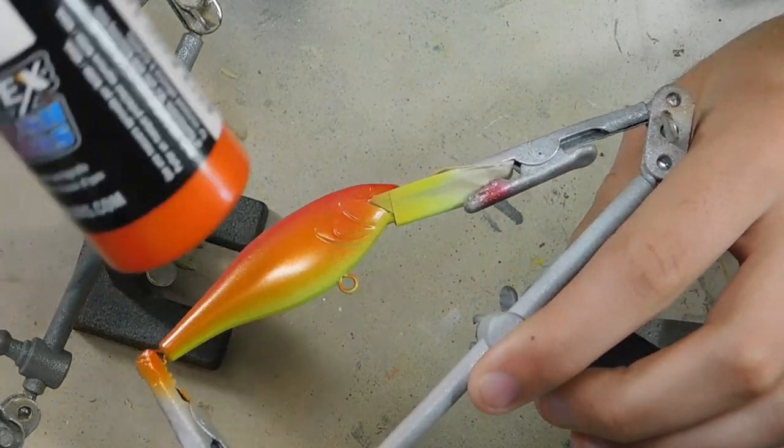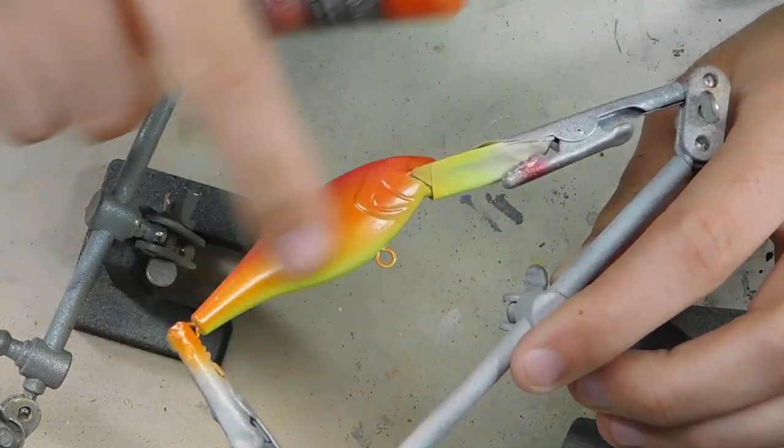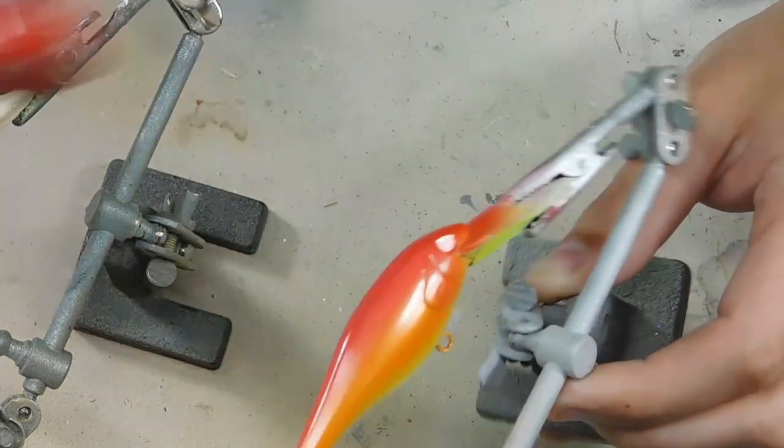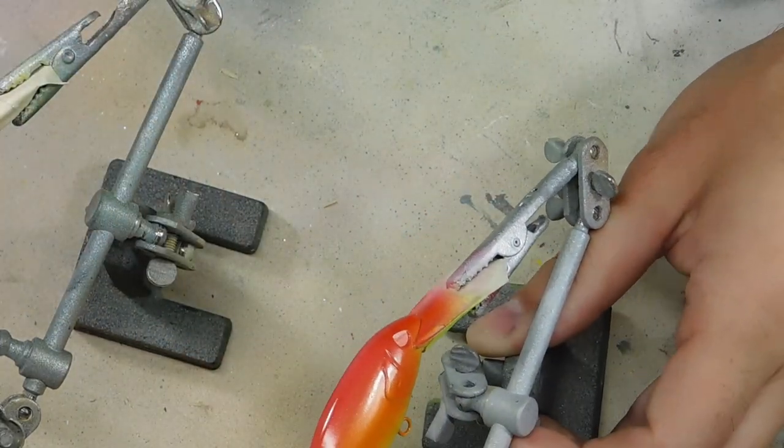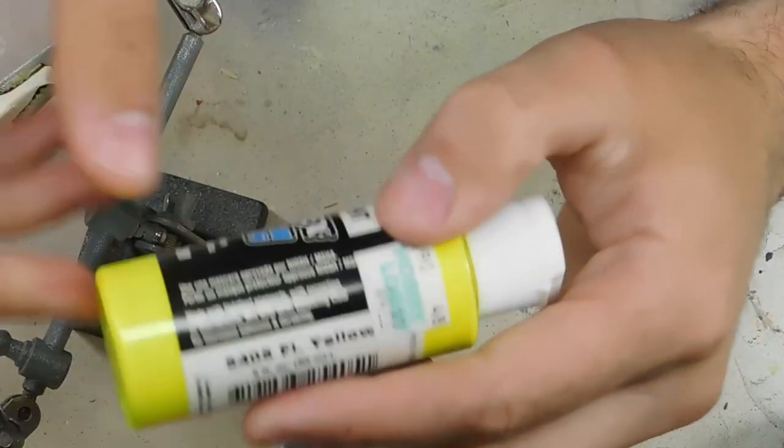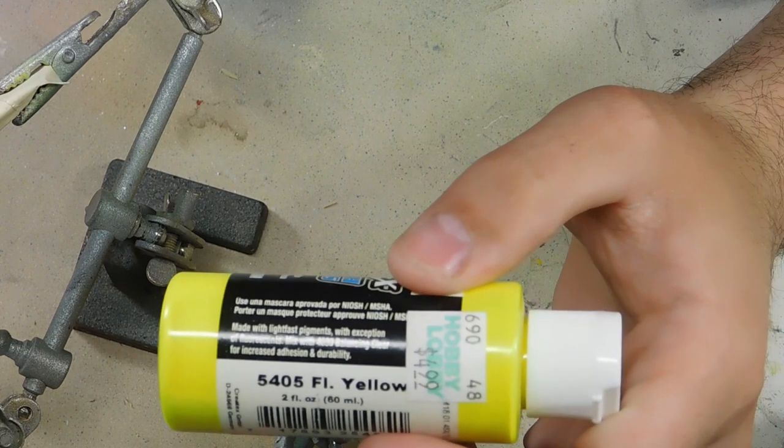I did the fluorescent yellow on the belly, then we did pearlized orange or tangerine along the side of the belly, and then we did opaque red along the back. So I'm going to kind of do along the same design, only we're going to start off with the fluorescent yellow.